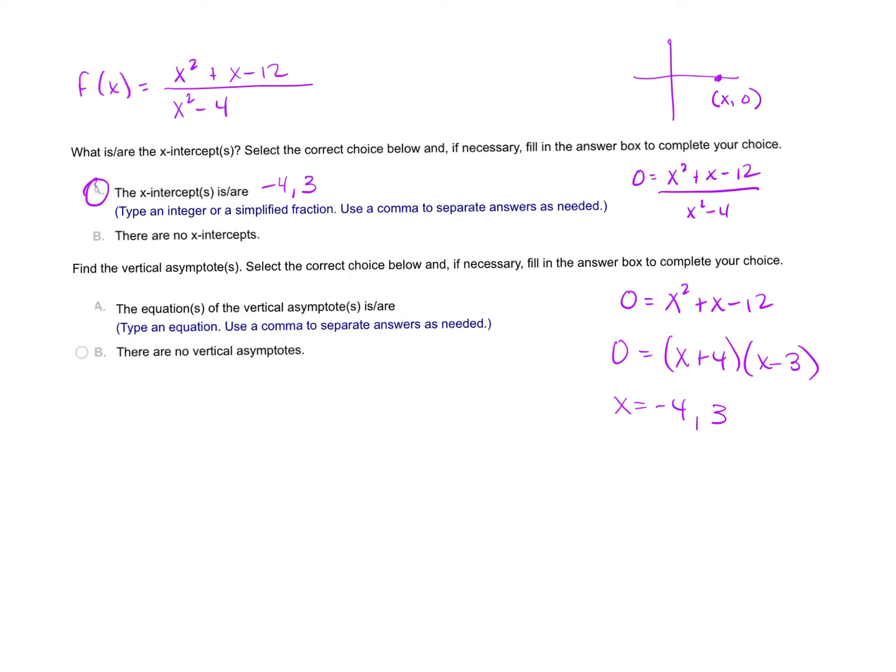For vertical asymptotes: vertical asymptotes happen when the denominator is 0. Set x squared minus 4 equal to 0. You get x squared equals 4, so x is plus or minus 2. Those are our two vertical asymptotes: x equals 2 comma x equals negative 2.